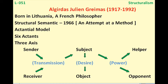Now, what is the actantial model? A few videos before we were talking about Vladimir Propp, who talked about seven or eight types of different characters in Russian folk stories. In the same way, Greimas also analyzed what sort of characters one can find in a plot and what sort of roles are there.